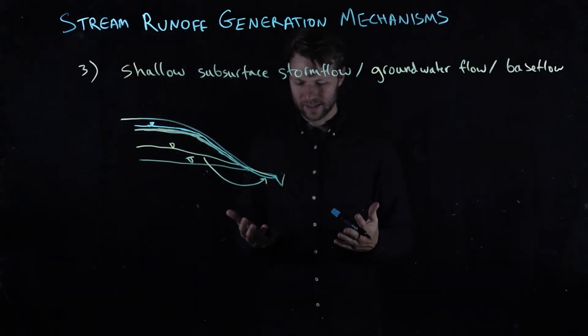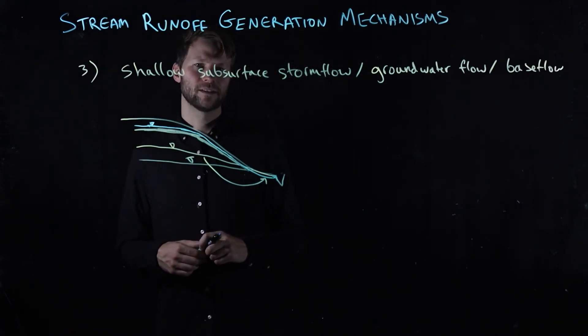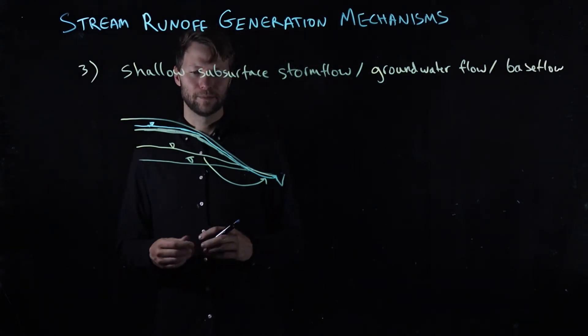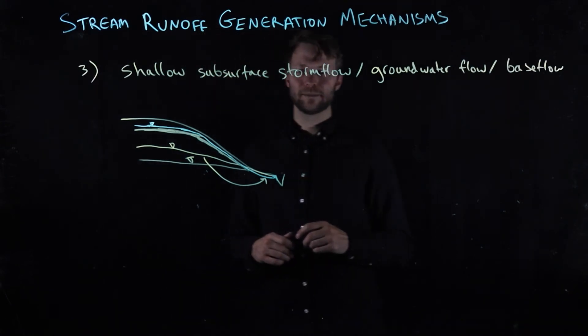These methods are generally slower than the overland flow examples, but nevertheless, they can be pretty fast.